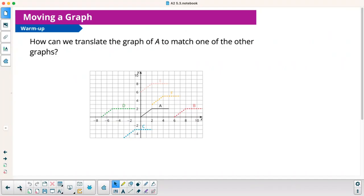All right, so the first one, how can we translate the graph of A to match one of the other graphs? So I guess I'll just kind of go through all of them here. So if I were to trace A, to get to B, I'd have to go, I'm going to find a point that matches, so I'm going to use this one right here. I have to go right 6, so B is going to be right 6.